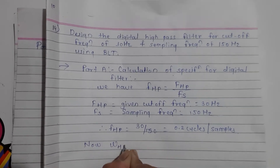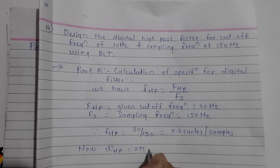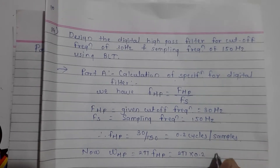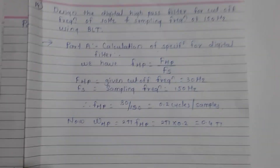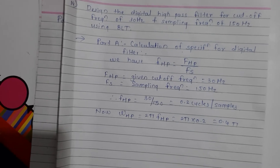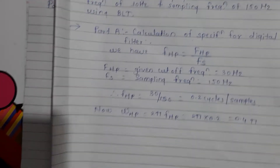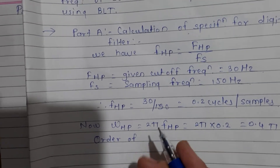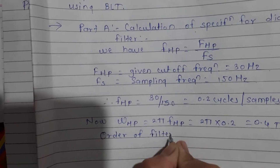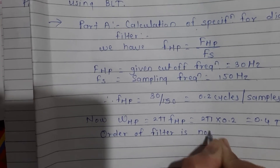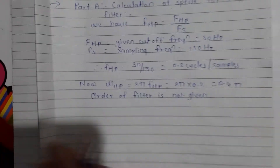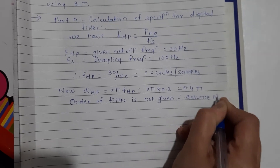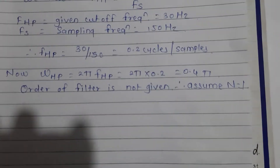Now Omega_HP is equal to 2 pi times F_HP, which equals 2 pi times 0.2, giving 0.4 pi. The order of the filter is not given, so we can assume order n is equal to 1. Therefore, assume n equals 1, that is the order of the filter is 1.